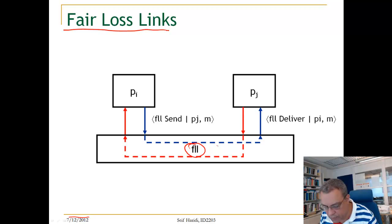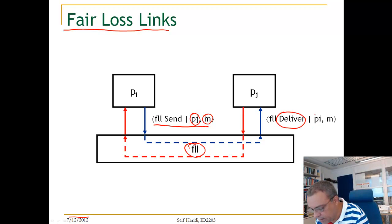The interface has two events. A send request event, which allows you to send a message M to process PJ. And the Fair Loss Link has also a response or indication event, which is to deliver the message from PI to the process that is receiving the message.